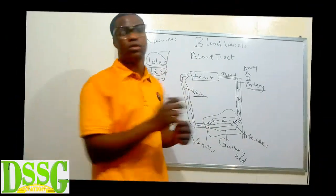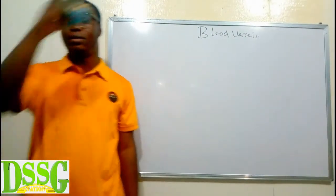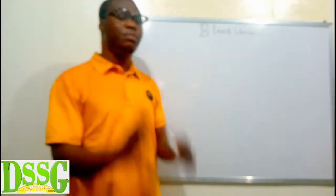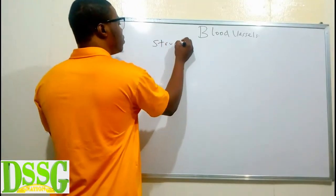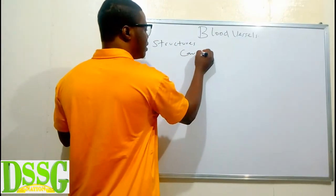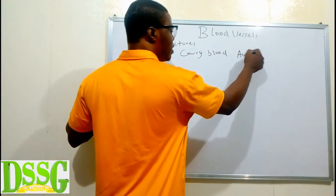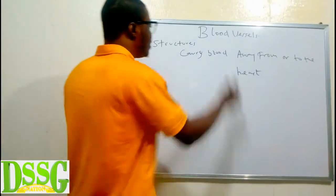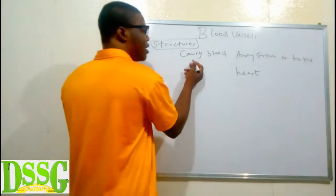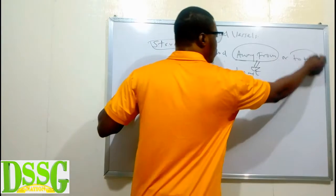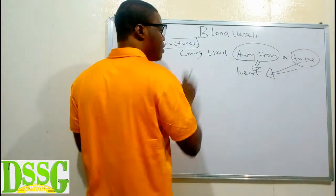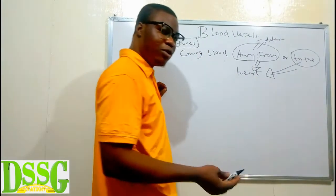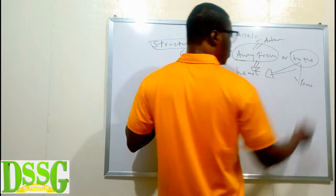Let's now look at the types of blood vessels. The cardiovascular system is composed of the heart, the blood vessels, and the blood. Blood vessels are structures that either carry blood away from or towards the heart. So from this definition, we can identify the blood vessels that take blood away from the heart and those that carry blood back to the heart. That is the simple definition of blood vessels.